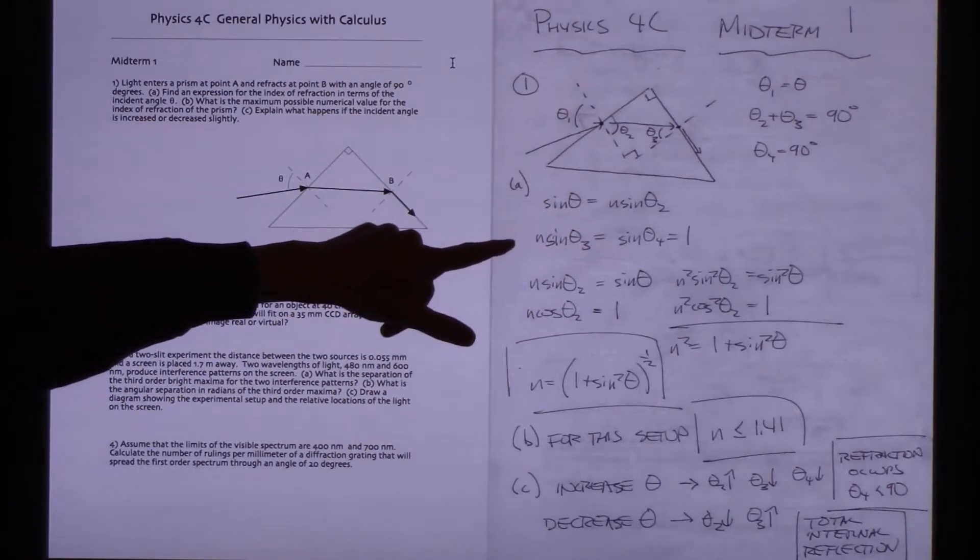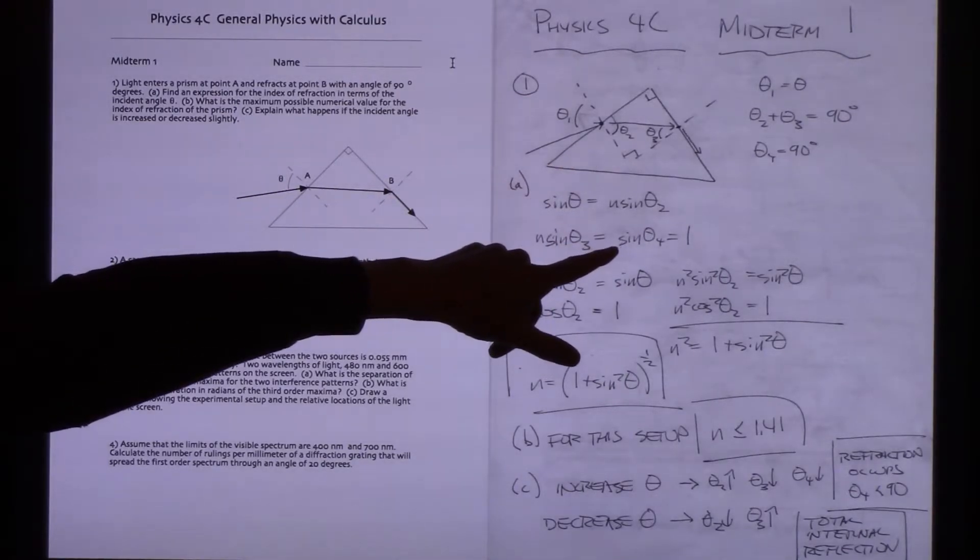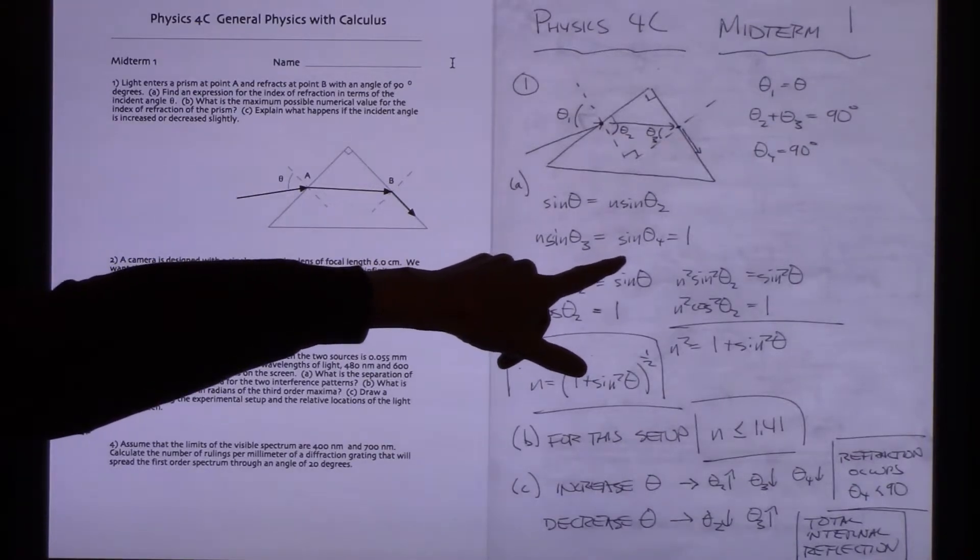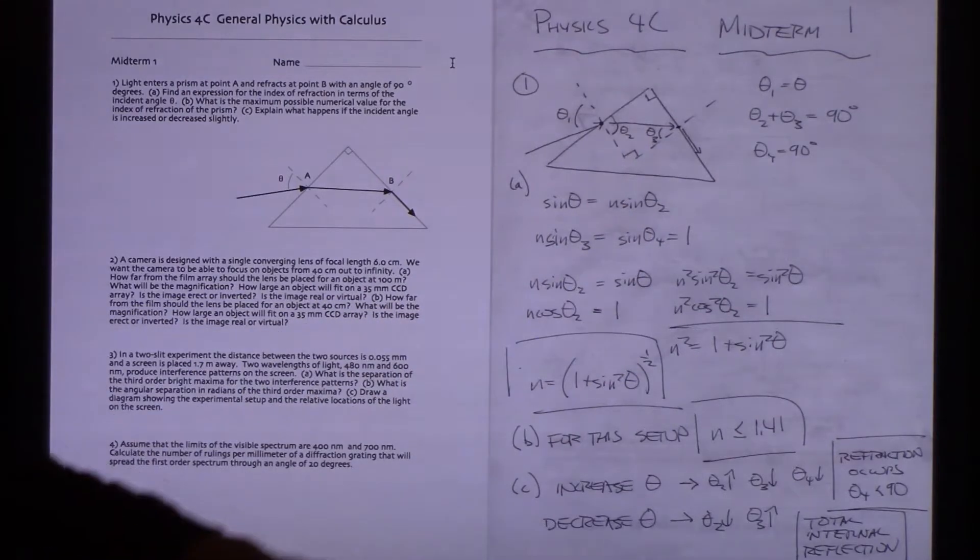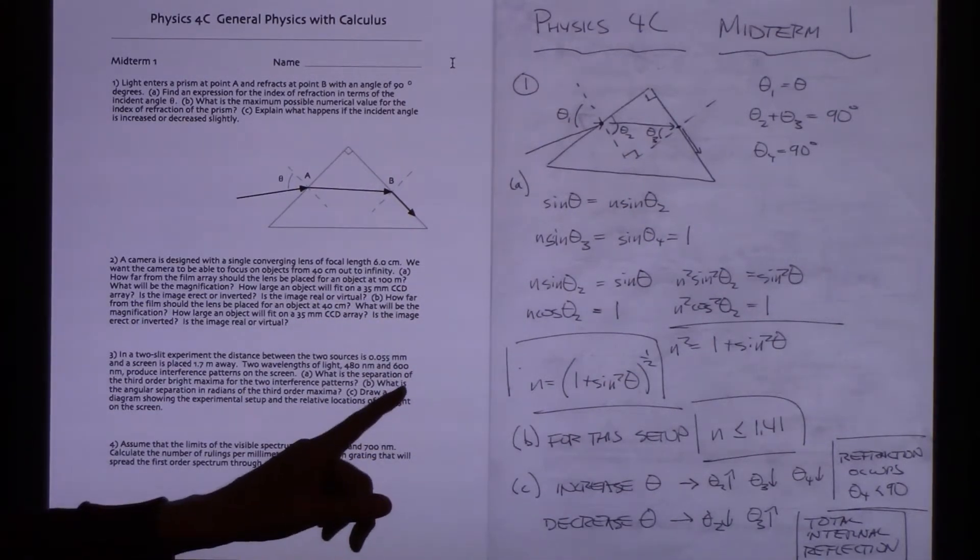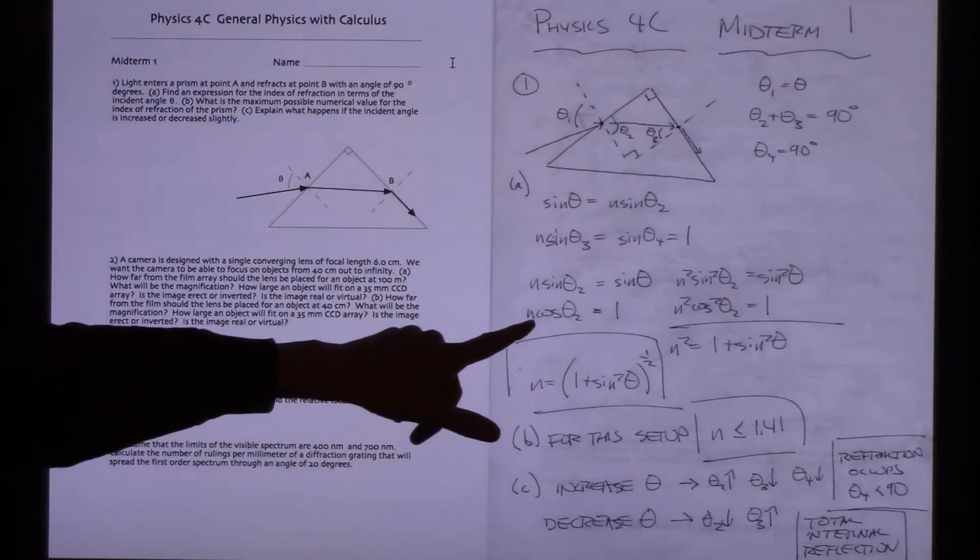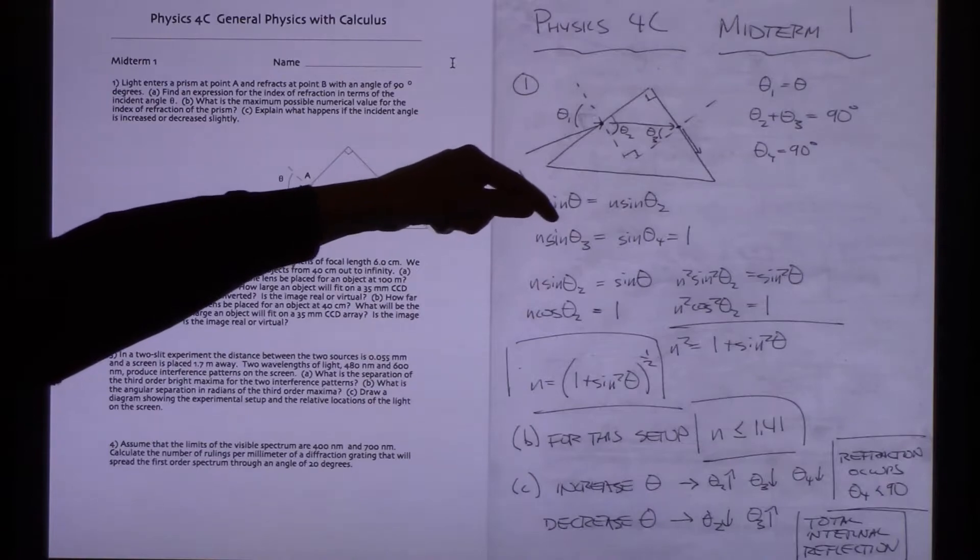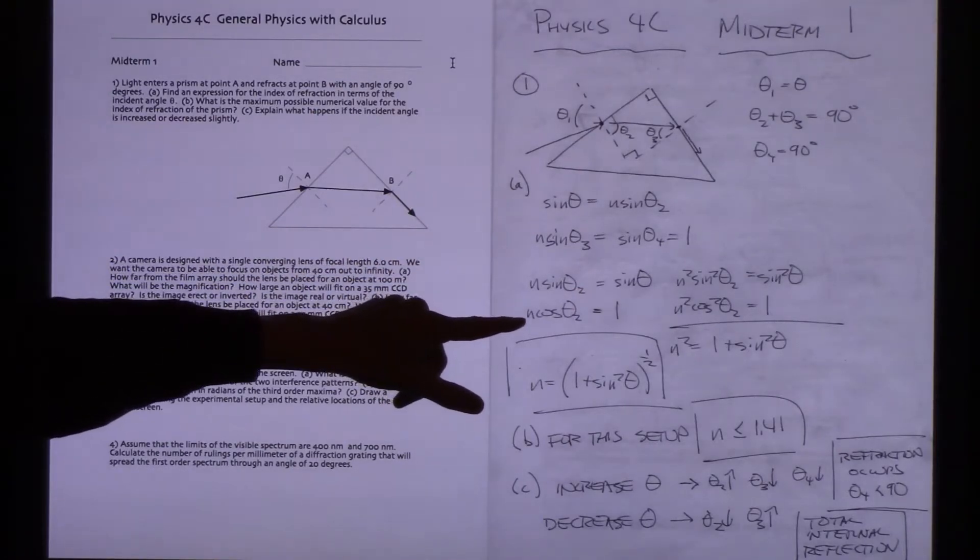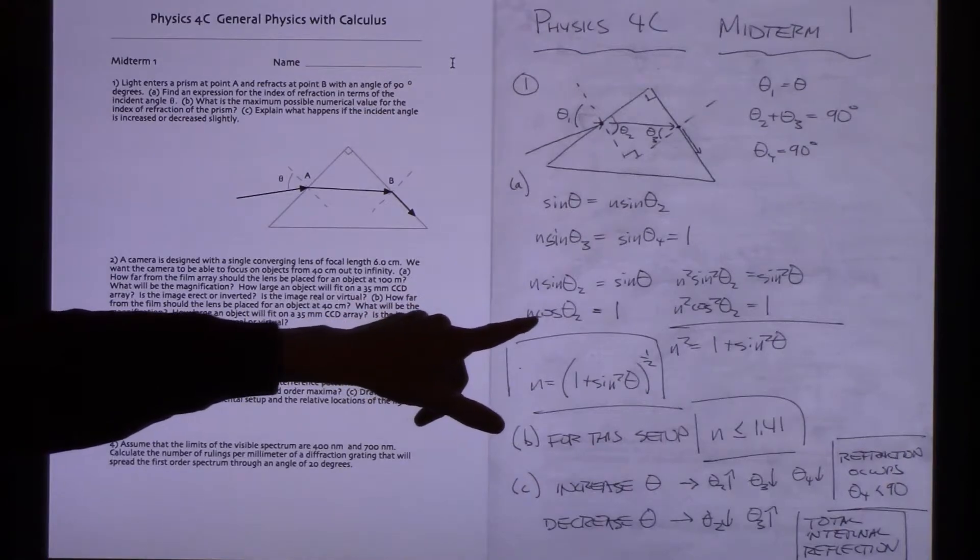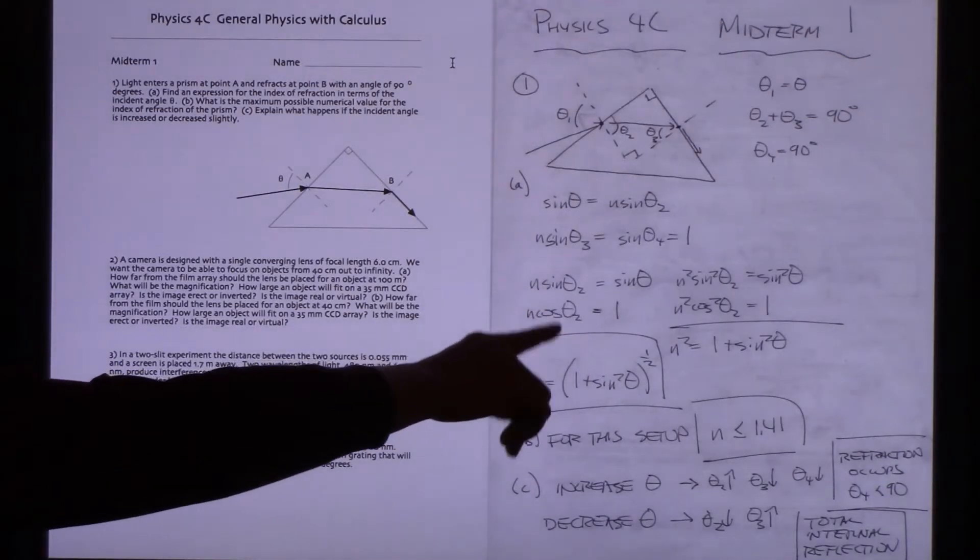Then here is my other refraction formula: n times the sine of 3 should equal n4 times the sine of 4. The sine of 4 is 90 degrees, and the index of refraction in the air is 1, so n sine theta 3 is equal to 1. I need to find a way to bridge sine theta 2 and sine theta 3, and for that I used that complementary effect. That's not the only way this can be solved, but it seemed easy enough to switch over and say sine theta 3 equals cosine theta 2, so I could make this substitution.